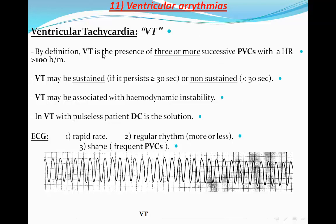Ventricular tachycardia (VT) is defined as three or more successive PVCs with a heart rate of more than 100 beats per minute. Once we identify at least three successive PVCs at a rate above 100 bpm, this is VT. It is further classified as sustained or non-sustained: if the ventricular run lasts 30 seconds or more it is sustained VT; if it lasts less than 30 seconds it is non-sustained VT.